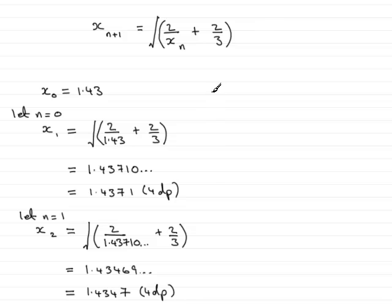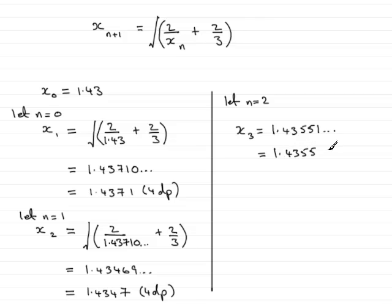And again, if you were to let n equal 2, you'd find you could work out what x3 was just simply by doing 2 divided by this value here plus two thirds and taking the square root of the lot. I'm not going to set the working out for this one, but if you do do it, you should find you get 1.43551 and so on. So to four decimal places, that's 1.4355 to 4dp. And that brings us to the end of this particular part of the question.